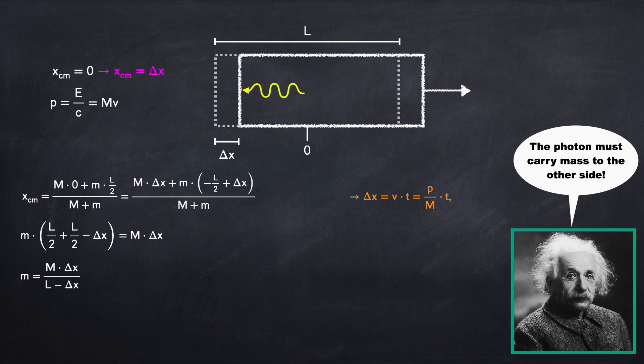And the time that will have taken will be that distance L minus delta x divided by the speed of light. Plugging this expression for time into our expression for delta x, we get that delta x equals P over M times L minus delta x over C.